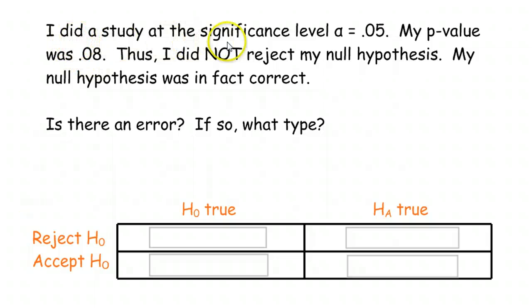Now, let's say you did a study at significance level of 0.05, the standard alpha. My p-value is 0.08. So, 0.08 means you do not reject because it is higher than alpha. So, we're going to say that we did not reject. We accepted the null. My null hypothesis was, in fact, correct. So, the null was true and you did not reject it. Therefore, you did the right thing. Good for you.